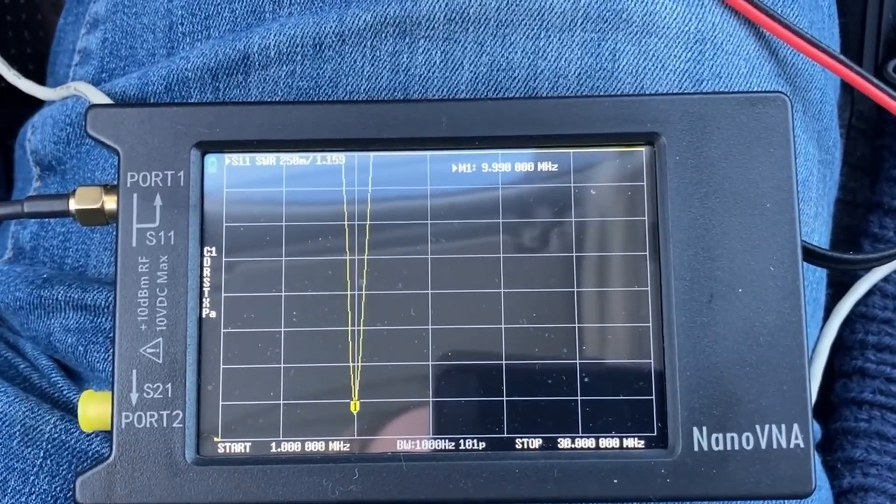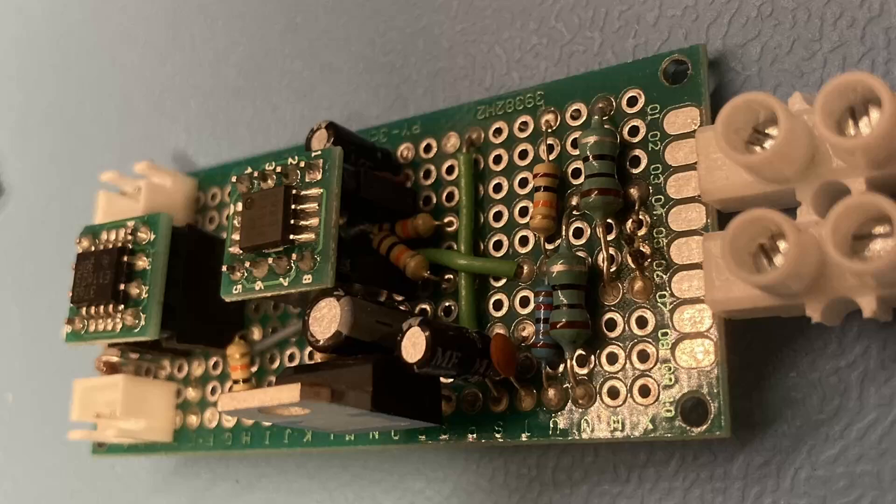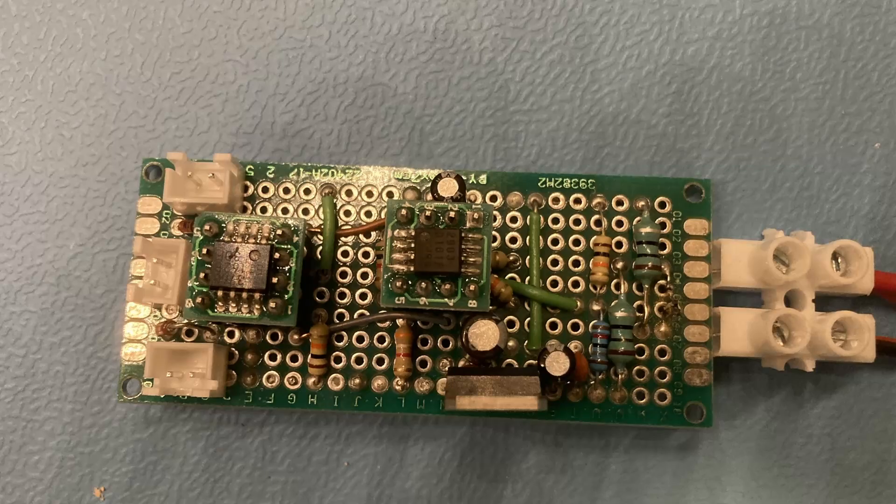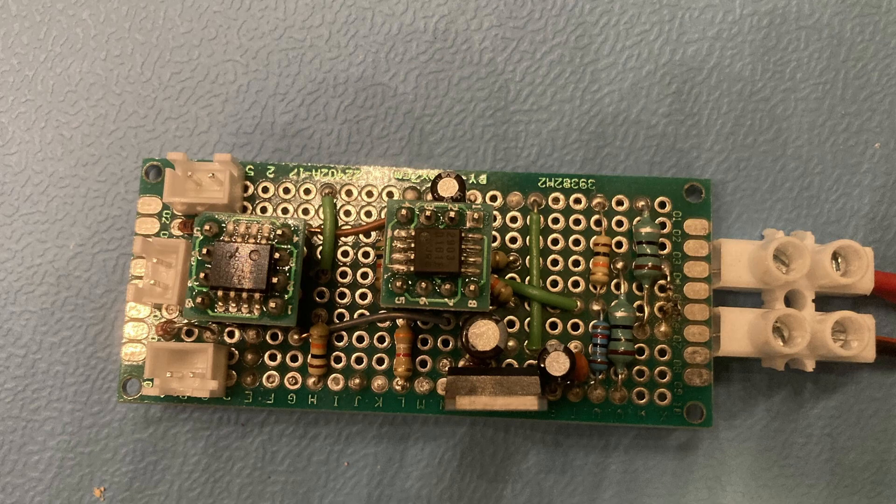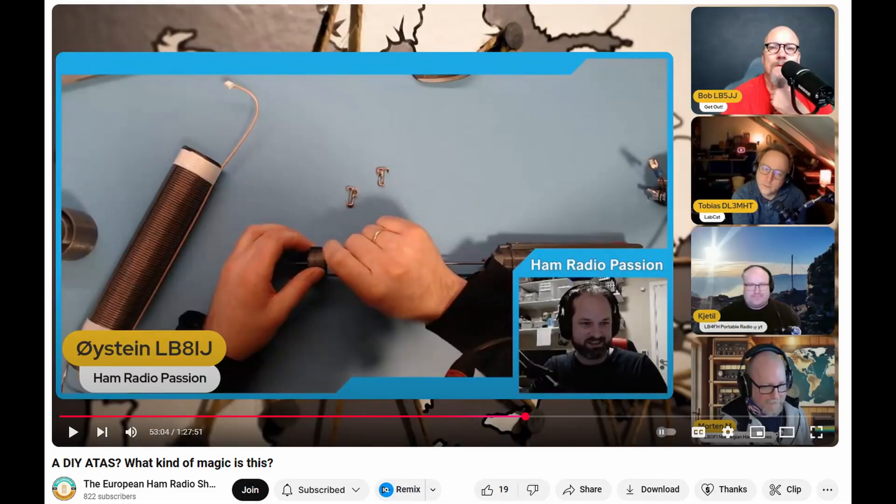In my next video we're going to take a look at the circuit for the control board of the coil and I have some improvements to make there as well. If you want to take a sneak peek you may head over to the European ham radio show where I was a guest explaining more about this antenna. See you next time!